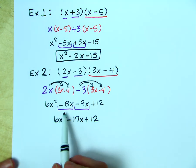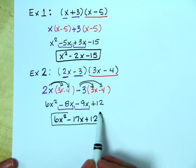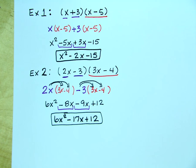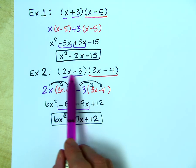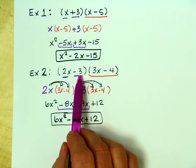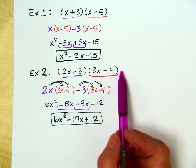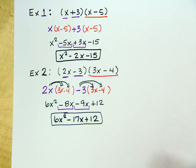This is the process that we use whenever we have a polynomial being multiplied by another polynomial. Simply take the first polynomial, split it up into its various terms, and take each of those terms and multiply it by the second polynomial. This has been polynomial distribution. Have a great day.